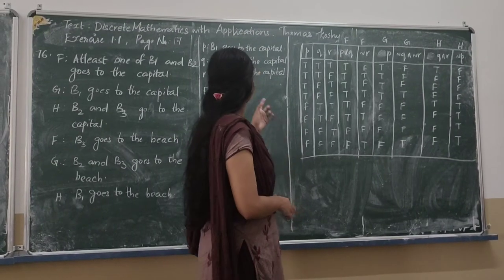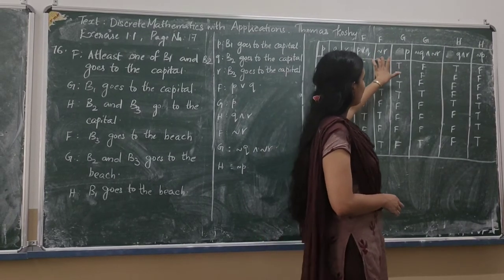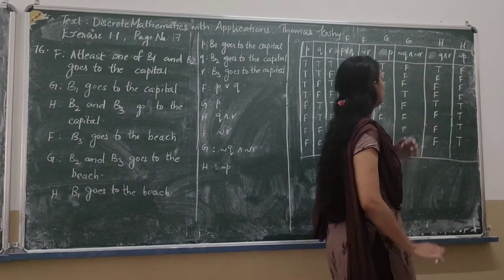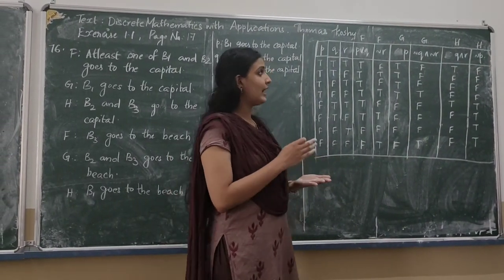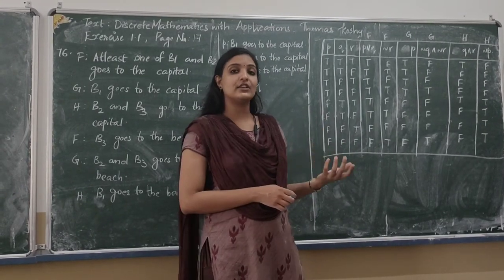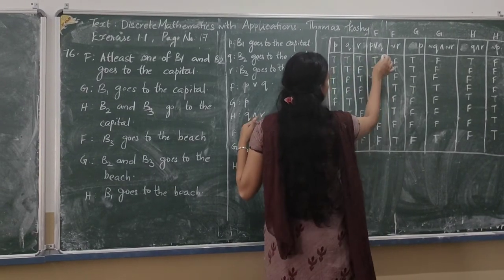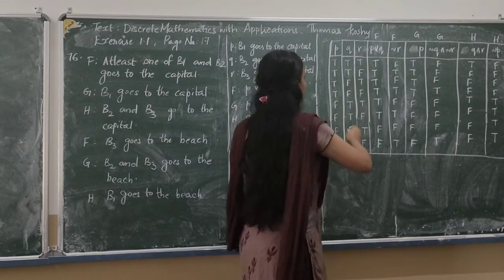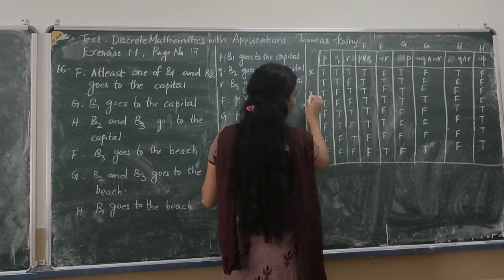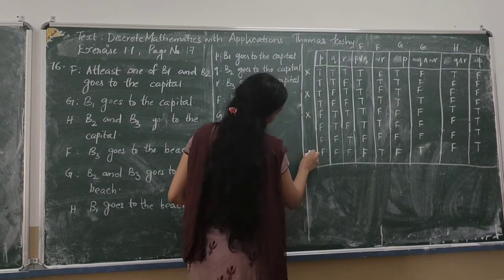We construct the truth table for propositions P, Q, and R. The statements made by F are P or Q and negation R. The statements made by G are P, and negation Q and negation R. The statements made by H are Q and R, and negation P. We eliminate rows where a person says a true and a false statement simultaneously, since knights and knaves cannot do both.